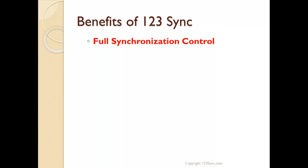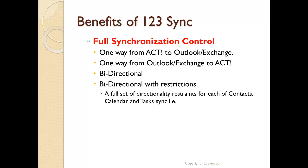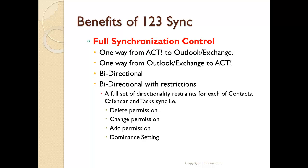123Sync provides full synchronization control. It can go one way from ACT to Outlook/Exchange, one way from Outlook/Exchange to ACT, bi-directional, or bi-directional with restrictions. A full set of directionality controls are available for contacts, calendar, and task sync. You can have delete permissions, change permissions, or add permissions enabled, as well as a dominant setting — if there's a modification in both ACT and Outlook, you can specify which one wins.